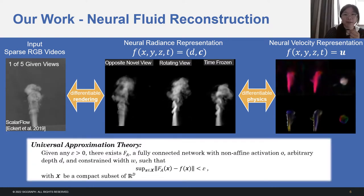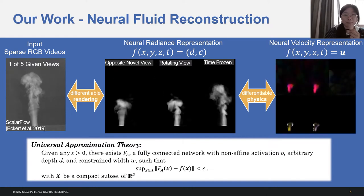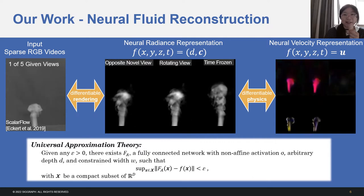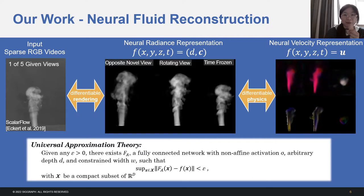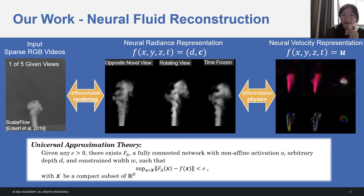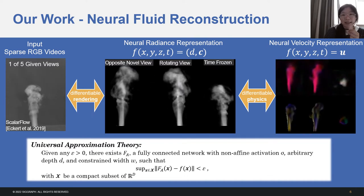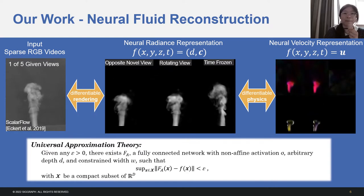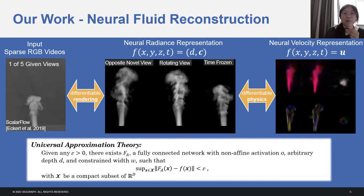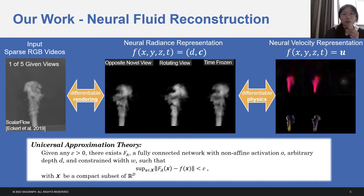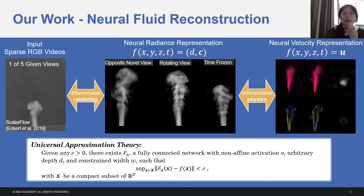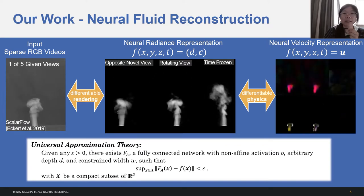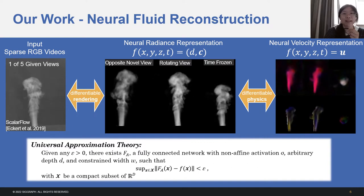The idea of our work to represent continuous spatial temporal functions of fluids with neural networks is inspired by the universal approximation theory. According to the theory, there exists a fully connected network that can approximate continuous high dimensional functions accurately. Unfortunately, the theory doesn't provide an exact way to produce such an accurate network. Thus, it is interesting and meaningful to explore the differentiable rendering and physics and to see what they can bring us.